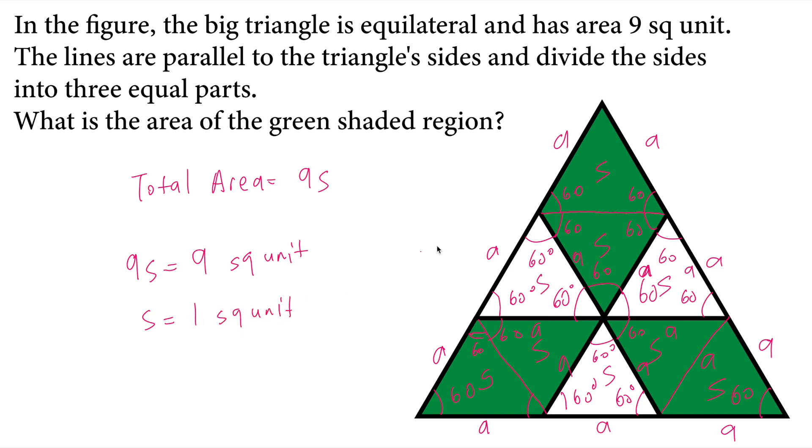So how many S we have in greens? We have 6S equals to 6 times 1 square unit, which is 6 square units is our answer.